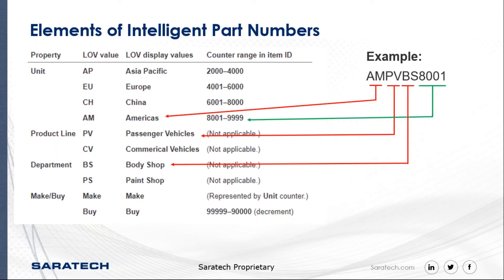The elements of intelligent part numbers include a pull-down menu for the unit displayed when creating a new item, with separate pull-downs for product line, department, and whether it's a make or buy. There's also a counter at the end tied into the previous attributes on the item ID. In this example, we have something built in the Americas, from the passenger vehicles product line, in the body shop department, with a counter between 8001 and 9999 for Americas parts.